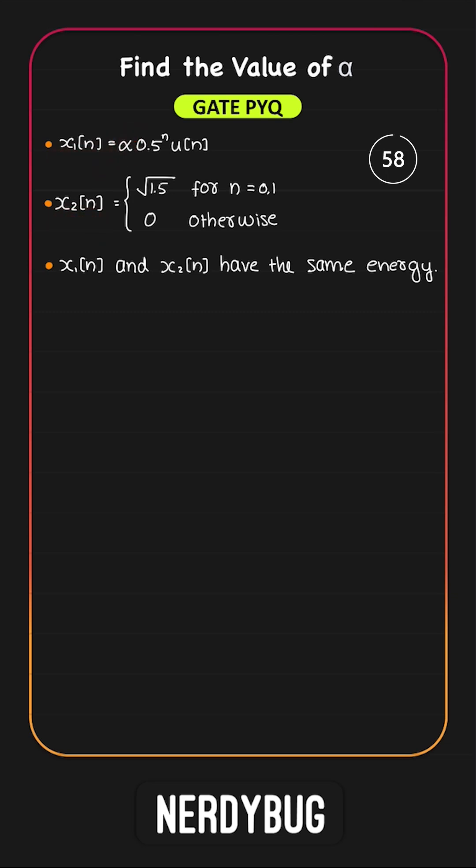Energy of the first signal can be calculated like this. We have to square the magnitude of x1 that gives us this. Since x1 has u over here, we are only taking values of n from 0 to infinity.